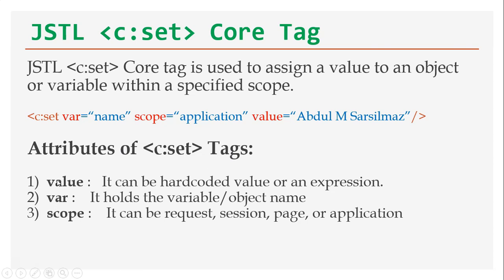There are three attributes in the c:set JSTL tag. First is the value attribute — it can be a hard-coded value or an expression, such as a hard-coded string like 'Abdul M Sar Silmaz' or an EL expression. Second is the var attribute, which holds the variable or object name — whatever variable or object is specified, the value gets assigned to it. Third is the scope attribute, which can be either request, session, page, or application.